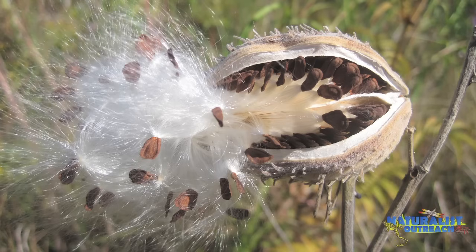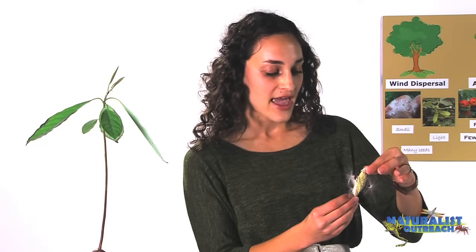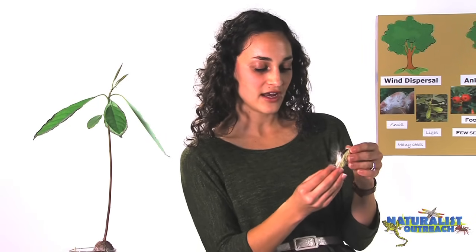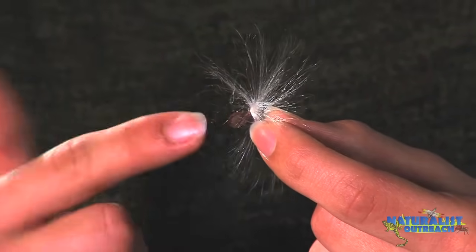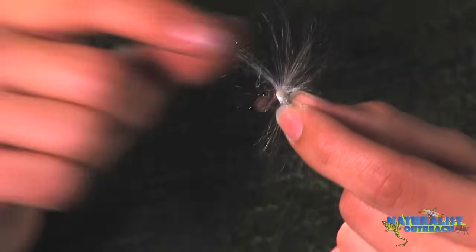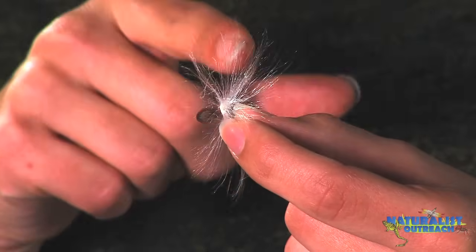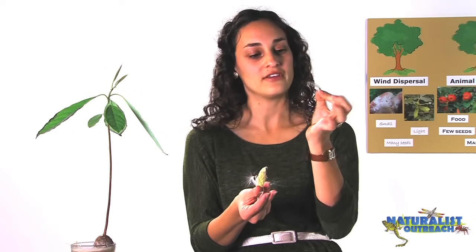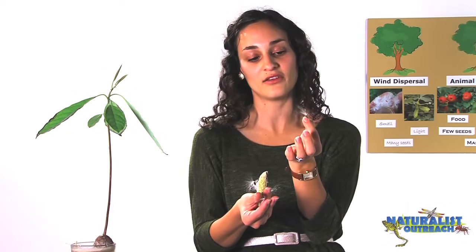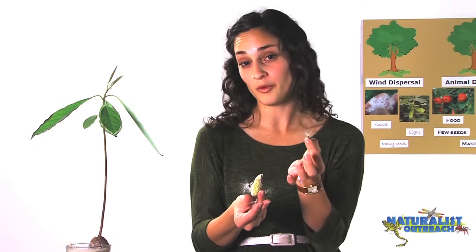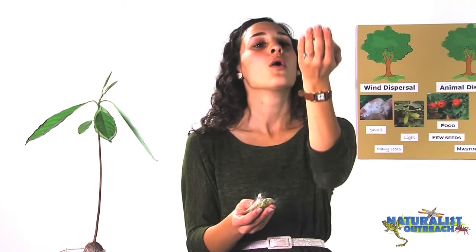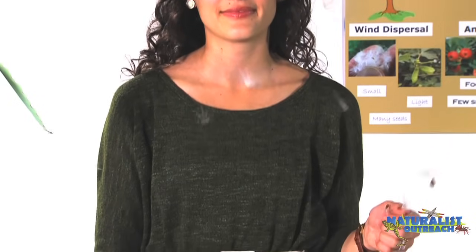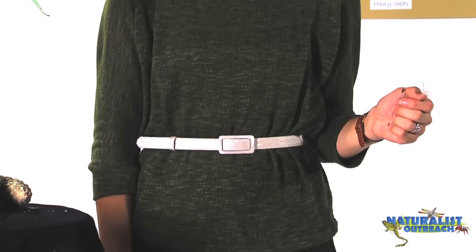Milkweed seeds come in a pod on a stalk on the plant. Inside this pod are hundreds of tiny milkweed seeds. Right here in my hand is the seed — it's a pretty tiny seed — and on top of the seed is a big poof of fluff. The entire point of this fluff is to carry the seed in the wind so it can get far away from the parent plant and find a suitable place to grow. If I toss it up in the air, you can see it drifts slowly down to the ground. If I blow on them, they float really gently and can get far away, and if there's a breeze, it'll carry them to a good place where they can grow.